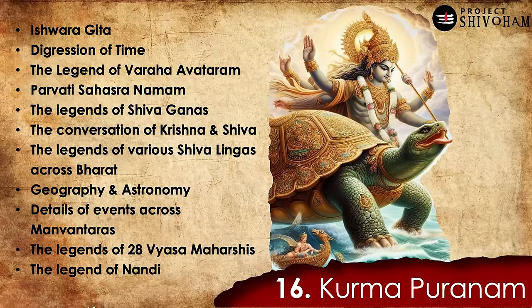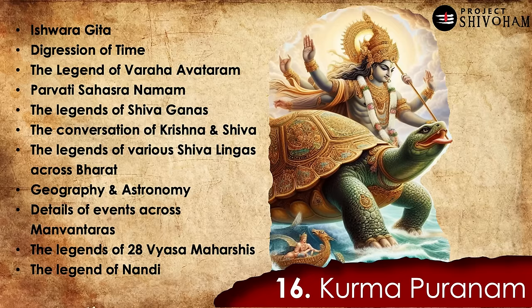Number 16, Koorma Puranam: it elaborates Eswara Gita — a compendium of philosophies and life lessons given by Mahadev. It also covers the digression and computation of time, the legend of Varahavataram, Parvati Sahasranamam, the legends of Shiva Ganas, the conversation between Krishna and Shiva, legends of various Shivalingas across Bharat, geography and astronomy, details of events across different Manvantaras, and the legend of 28 Vyasa Maharshis — who are quoted and explained for their works — and the legend of Nandishwara.